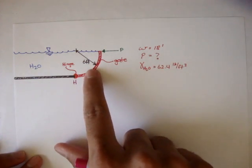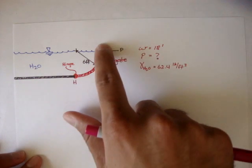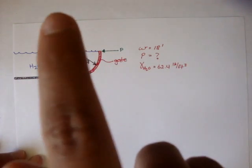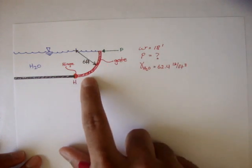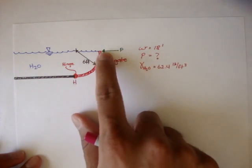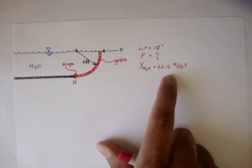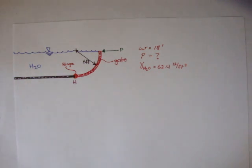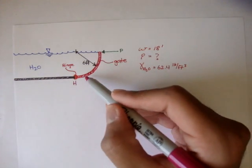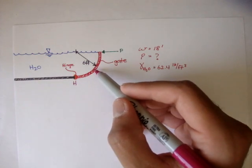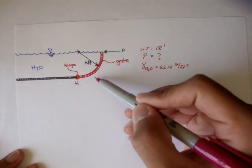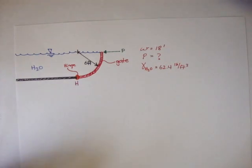This gate is a cross section view and it's 18 feet into the camera. They're asking what force P is needed to keep the gate from falling, and they give us the specific weight of water as 62.4 pounds per foot cubed. We're working with just atmospheric pressure, so the pressure at the top would be zero. They also say to neglect the weight of the gate, so we don't need to worry about that.